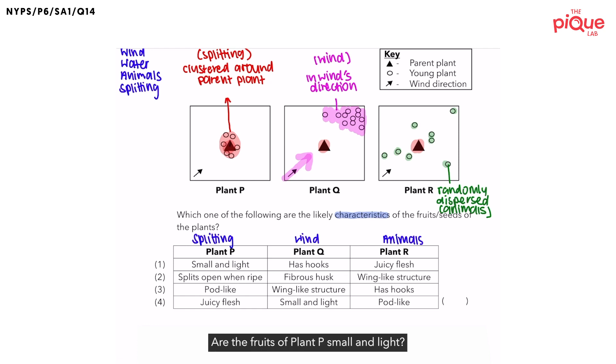Let's take a look at the first option. Are the fruits of plant P small and light? Is this a characteristic of fruits that are dispersed by splitting? No, they are most likely to be dispersed by wind. What about the fruits that split open when it is ripe? What is the dispersal method? It is splitting.